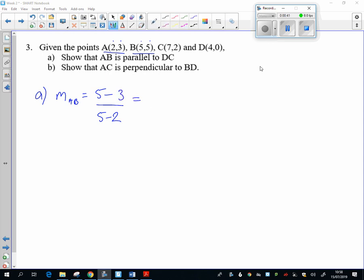So the gradient of AB is two thirds. And then let's check the gradient of DC. We're hoping these are going to come out as the same answer because we know they're supposed to be parallel. So change in y is two take away zero, change in x is seven take away four. So that's two thirds.